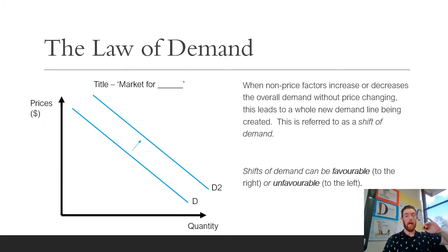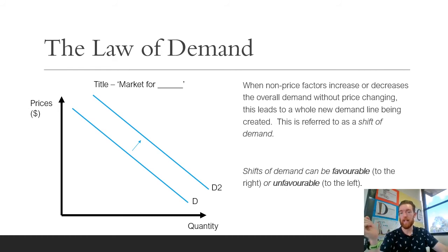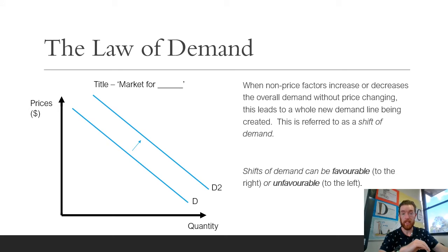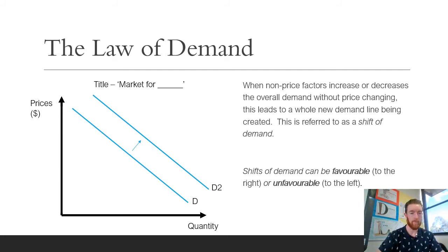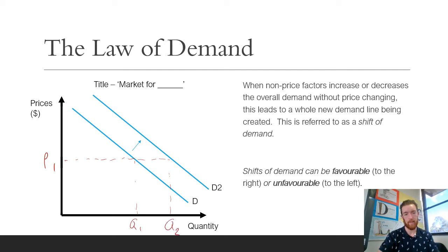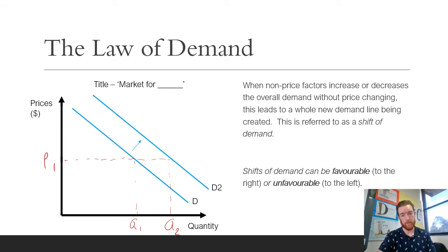After this, we get into situations where non-price factors cause increases or decreases in overall demand without the price changing. This leads to a whole new demand line being created — and this is referred to as a shift of the demand curve. A movement along the curve occurs when the selling price of a good or service changes. A shift occurs when anything other than price changes — so non-price factors. This can be favorable or unfavorable. At the same price P1, a favorable shift means more is being demanded. An unfavorable shift means less is being demanded — and favorable is always to the right, unfavorable always to the left.